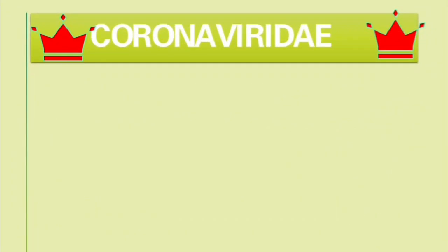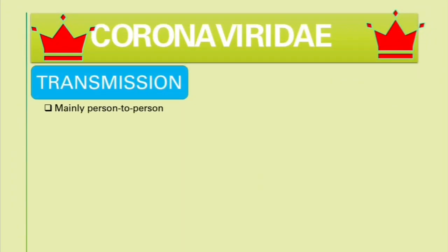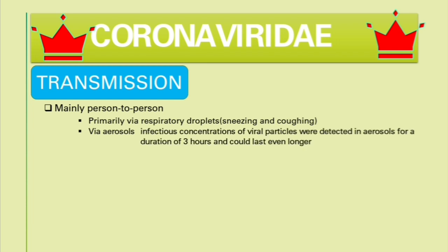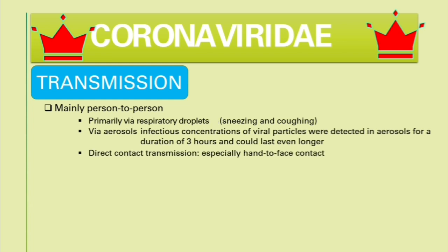Transmission of the coronavirus: firstly, there is man-to-man transmission, primarily via respiratory droplets through sneezing and coughing. Secondly, via aerosols — infectious concentrations of viral particles were detected in aerosols for a duration of three hours, and these particles could last even longer. Also, direct contact transmission, especially hand-to-face contact.